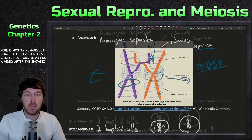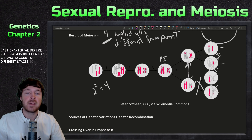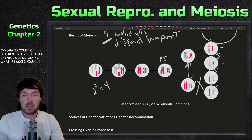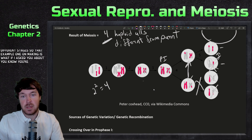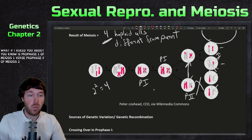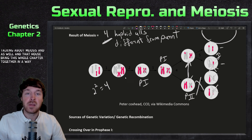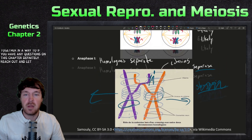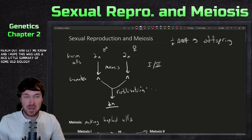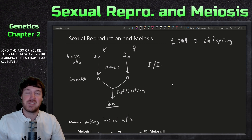That's all for this chapter. I'll be making a video after this showing an example problem — similar to last chapter with chromosome count and chromatid count at different stages, but now asking about, for example, prophase one of meiosis one versus prophase two of meiosis two and what the different chromosome or sister chromatid counts are. That helps bring this whole chapter together, so be sure to check that out. If you have any questions, reach out and let me know. Hope you all have a great day — see you next time!